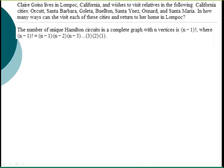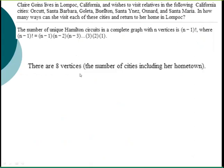You've got a situation where there's a person in Lompoc, California who wishes to visit relatives in the following California cities: Oxnard, Santa Barbara, Goleta, Buellton, Santa Ynez, Oxnard, and Santa Maria. How many different circuits are there? There are 8 vertices - that's the amount of cities.